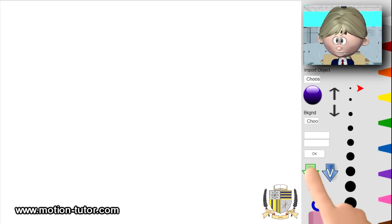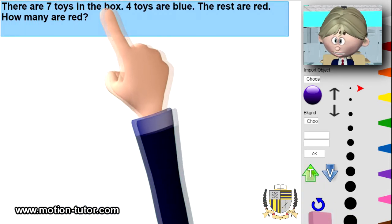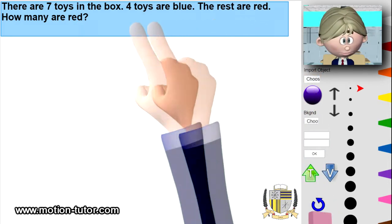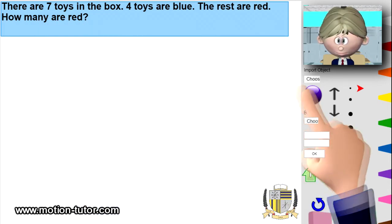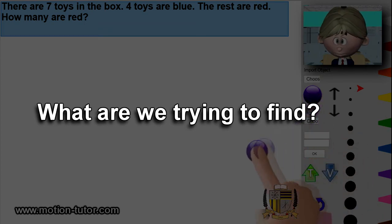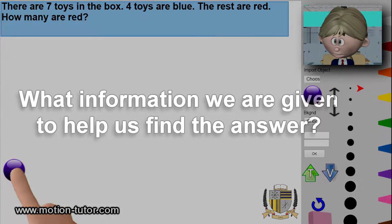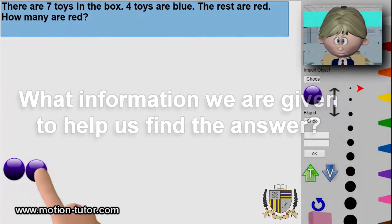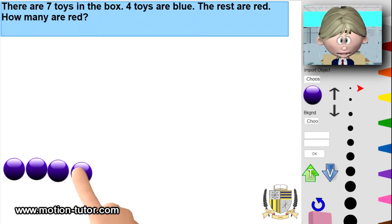Here's another example. There are seven toys in the box. Four toys are blue. The rest are red. How many are red? What are we trying to find? We're trying to find how many are red. What information are we given? We're given that there are seven toys in the box and four are blue.